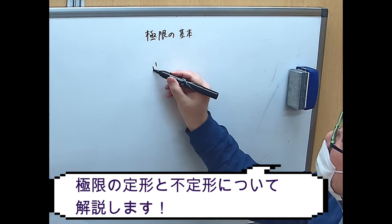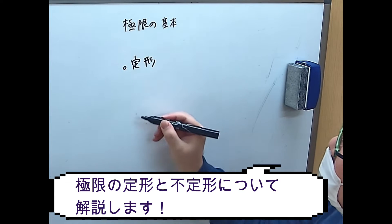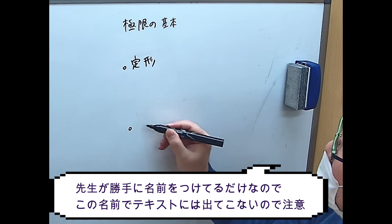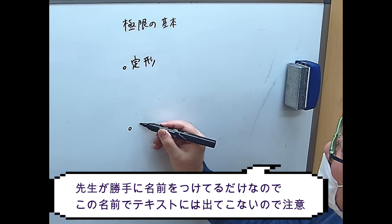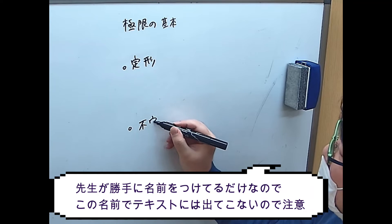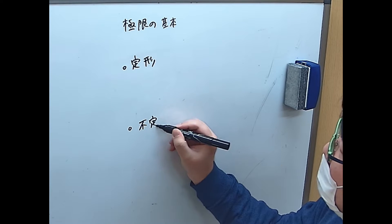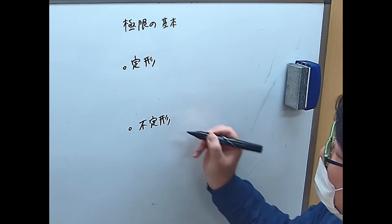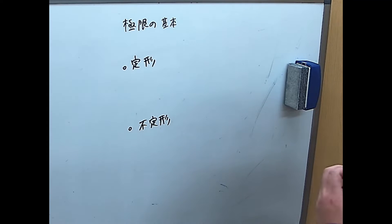極限の基本形で「定形」と「不定形」というのをやります。これは先生が勝手に名前をつけているだけなので、テキストとか読んでもこんな名前は多分出てこないと思いますが、まあご愛嬌ということで。